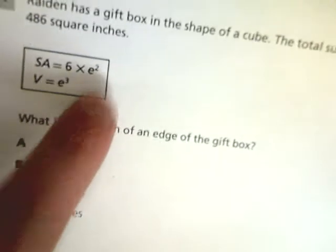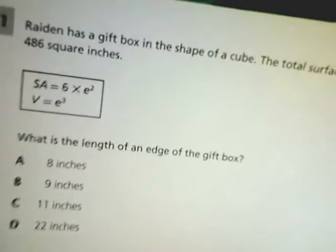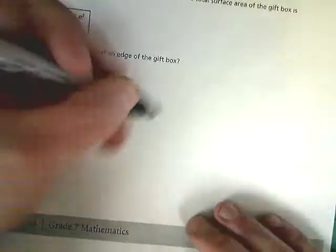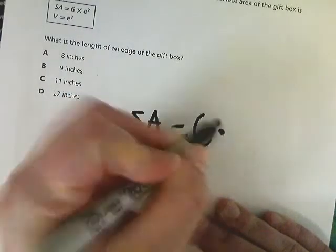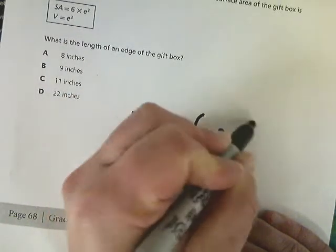In order to find the area of one of the squares, we do base times height or side squared. So that's why our surface area formula that they give us is 6 times e squared. e would be the edge or the length of one of the sides. So what I'm going to do is write down that formula.